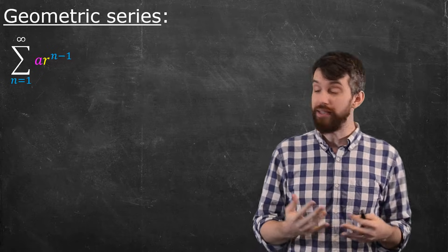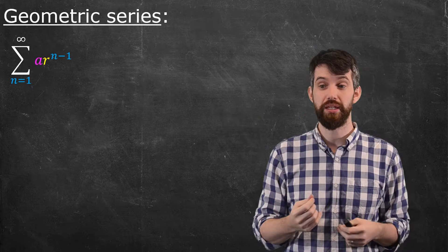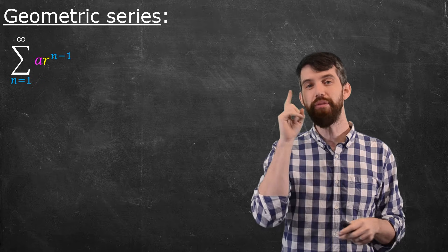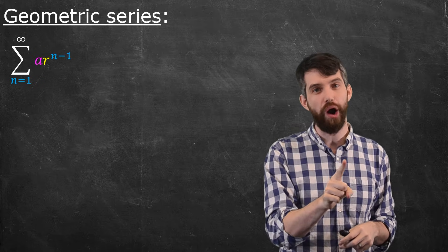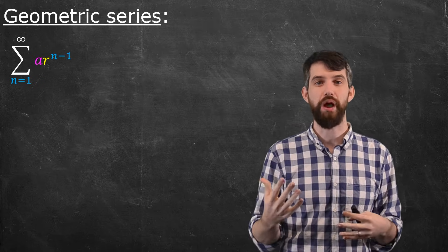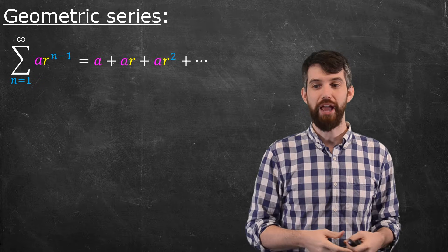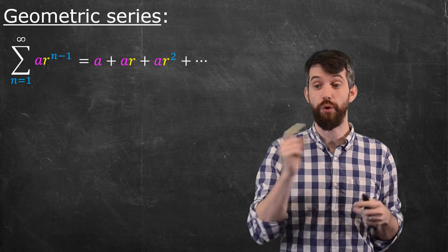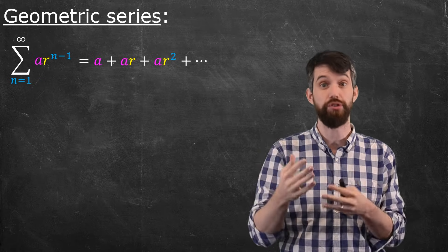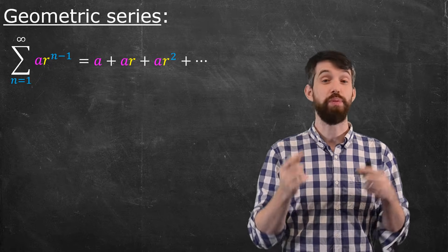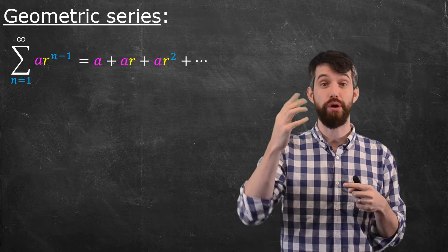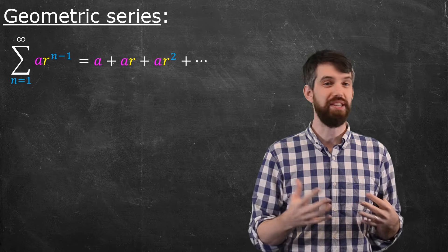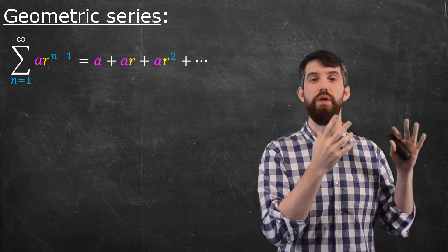A geometric series in general is a summation of some constant a — just a multiplicative constant — and then some ratio r to the power of n minus 1. For example, if we express out the first few terms, the first one is plugging in n equal to 1, so r to the 0 is 1, giving just a. When you plug in n equal to 2, you get r to the power of 1, so ar, and so on. We've seen examples where r was 1/2 or r was 1/3.